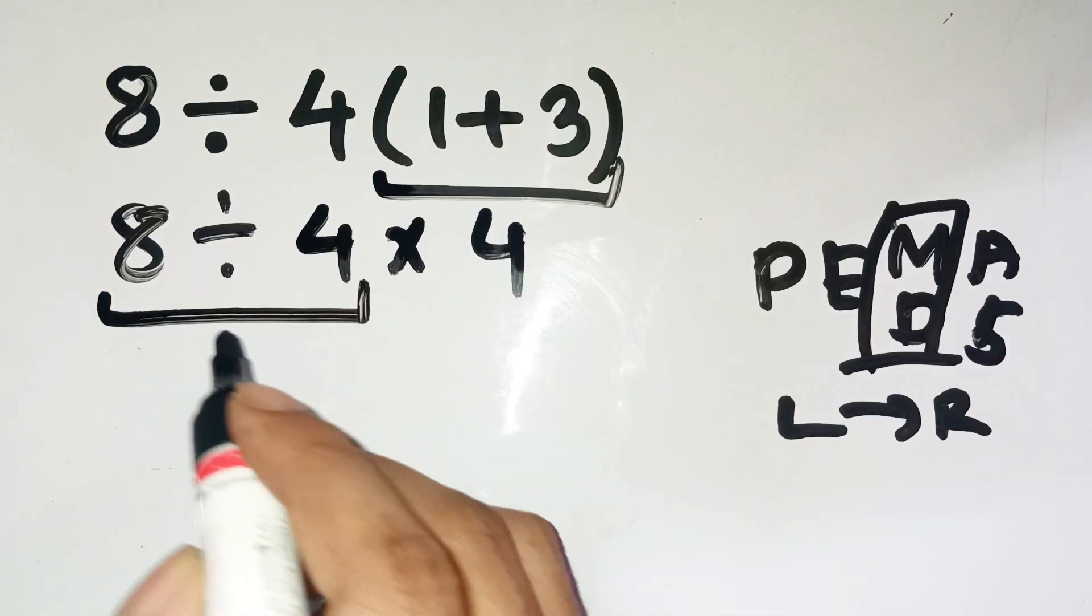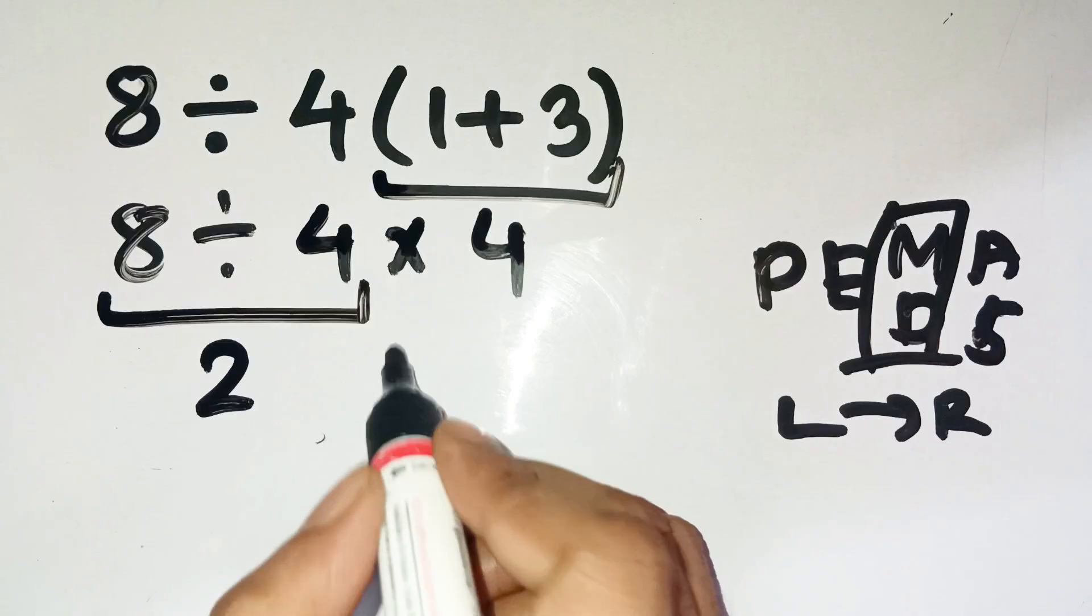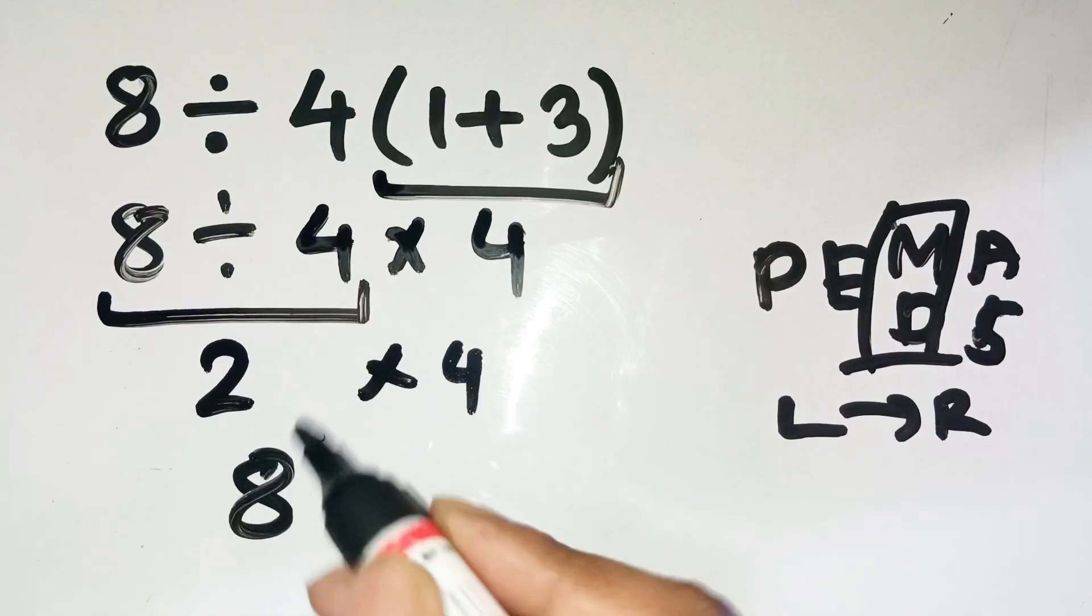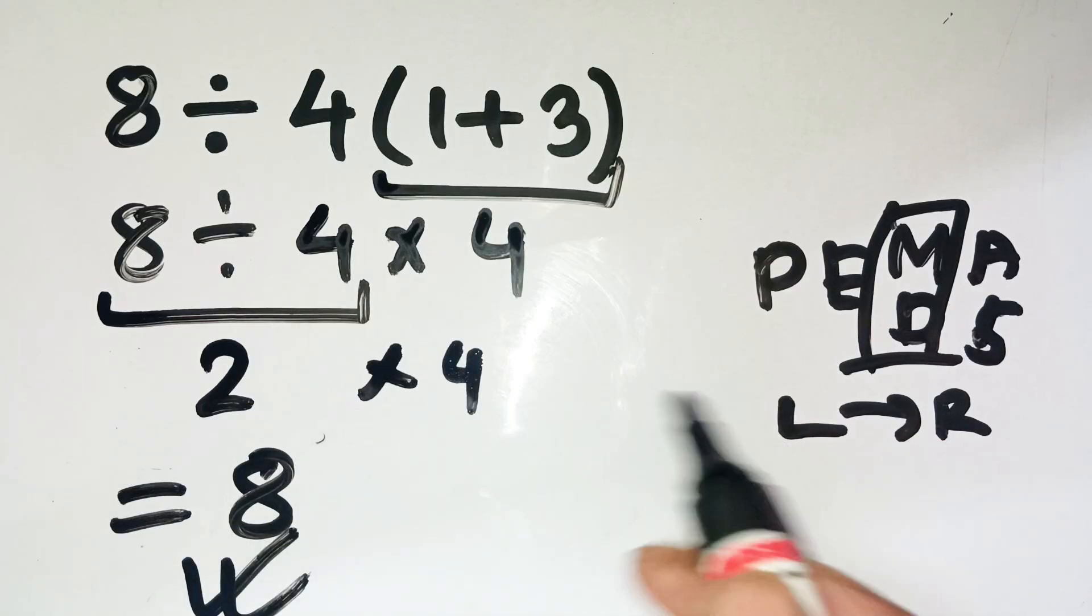First, 8 divided by 4 equals 2. Then 2 multiplied by 4 gives 8. So the correct answer is 8, not one half. Crazy difference, right?